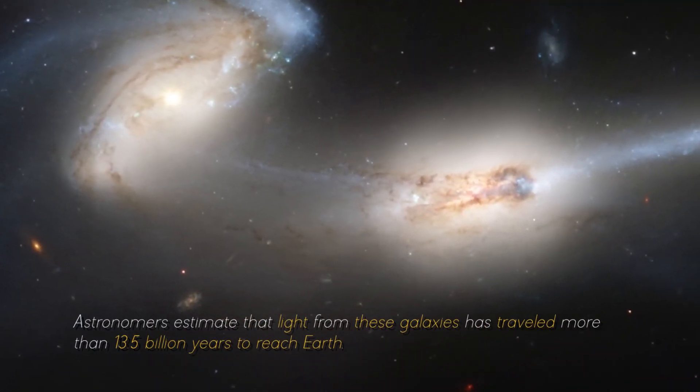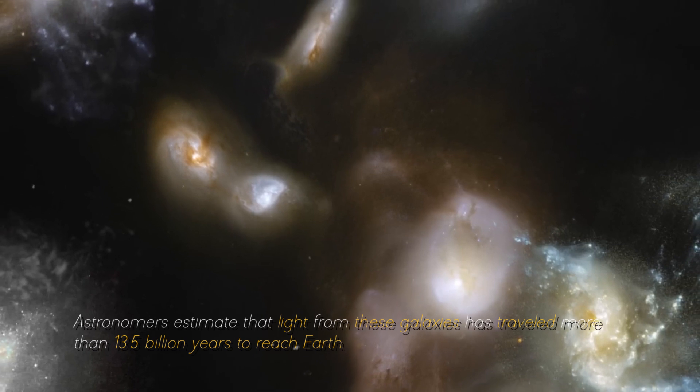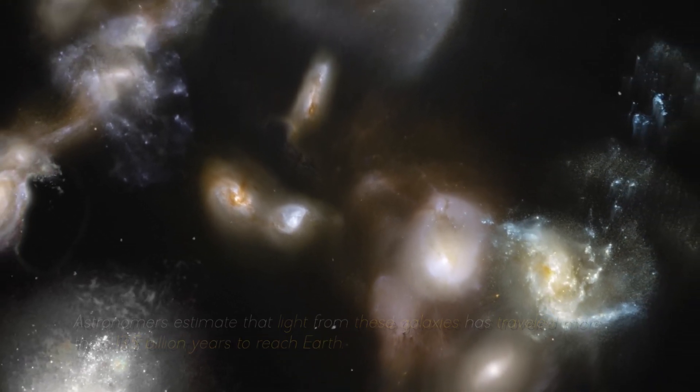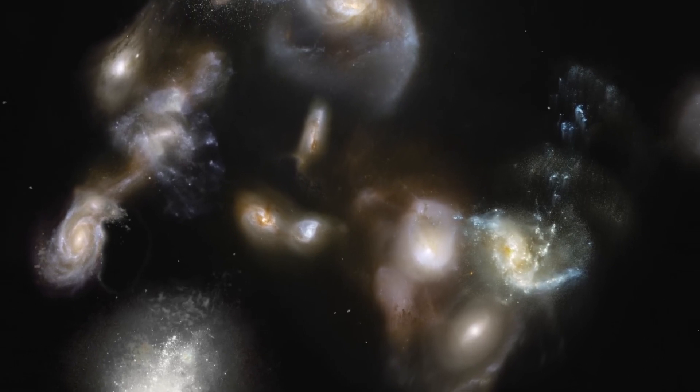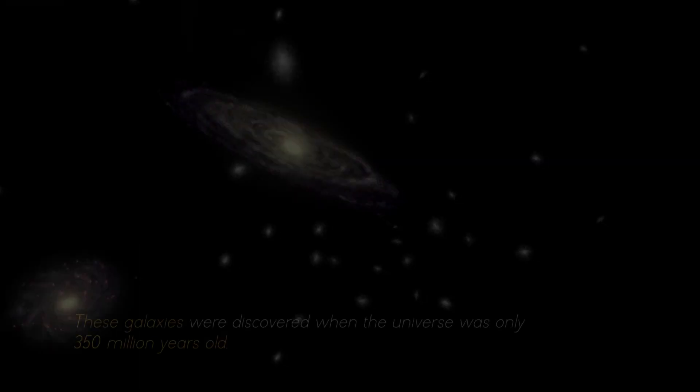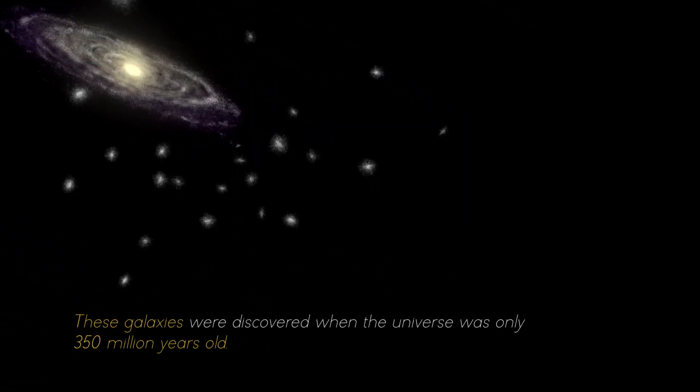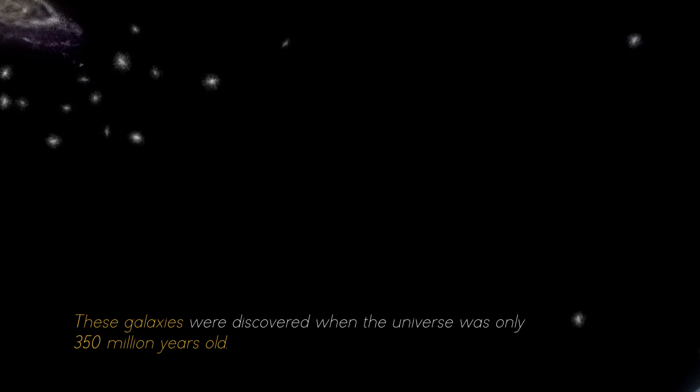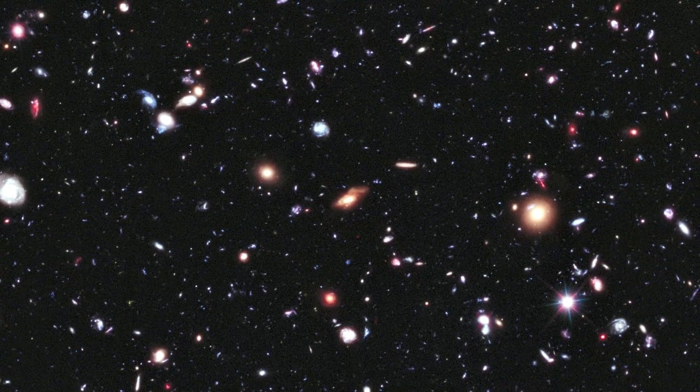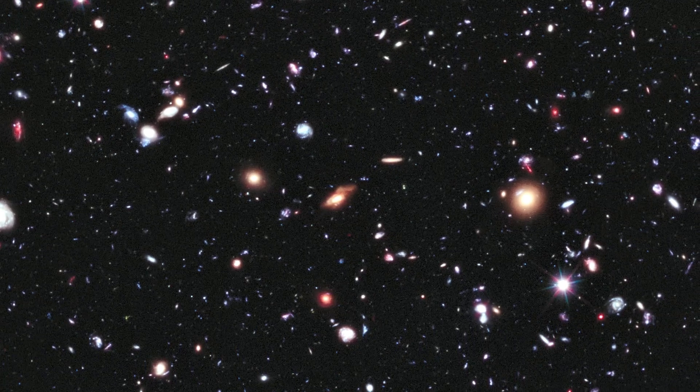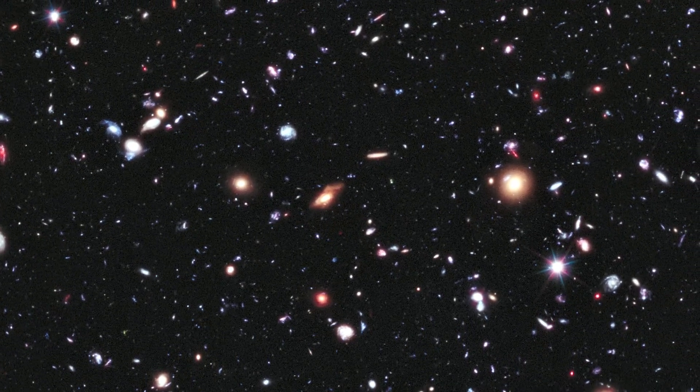Astronomers estimate that light from these galaxies has traveled more than 13.5 billion years to reach Earth, giving us a glimpse into the distant past of the universe. These galaxies were discovered when the universe was only 350 million years old, shedding light on how quickly the first generations of galaxies emerged. Spectral data confirmed that these galaxies are at the edge of our view, some even further away than Hubble could see.